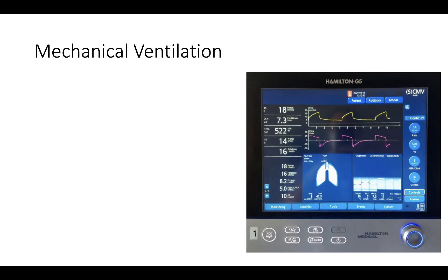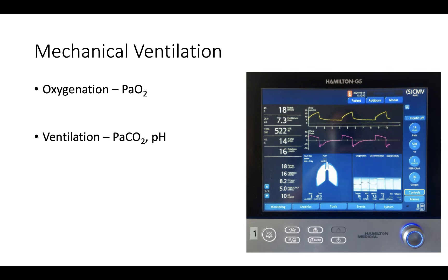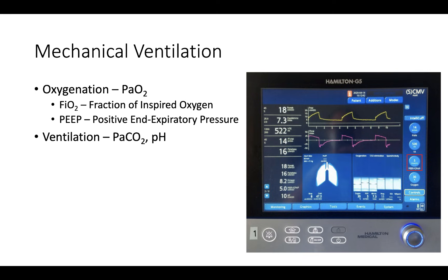The patient is now intubated and receiving mechanical ventilation. Shown here is an image of the Hamilton ventilator interface. While a patient is on the ventilator, we can control both oxygenation — the PaO2 — and ventilation — the pH and PaCO2. The four major variables that allow us to affect these numbers are: FiO2 (the fraction of inspired oxygen) and PEEP (positive end expiratory pressure), which control oxygenation; and tidal volume and respiratory rate, the components of the minute ventilation equation, which control ventilation.